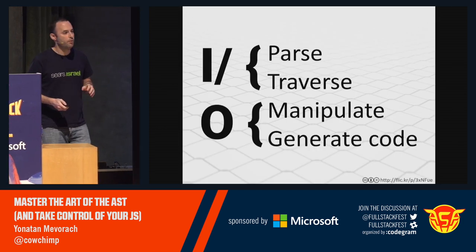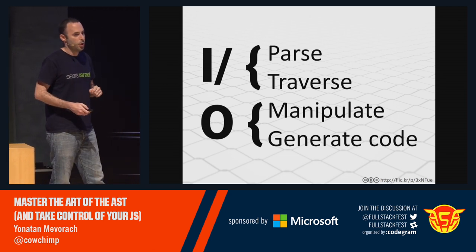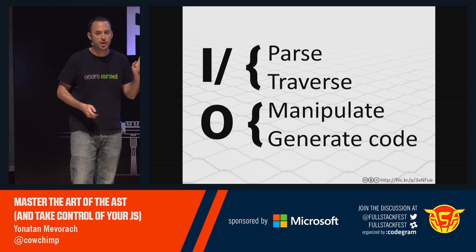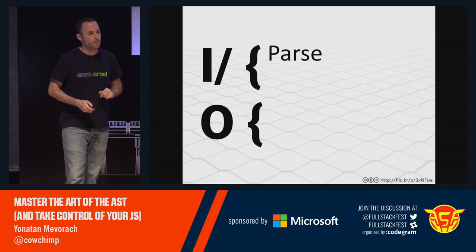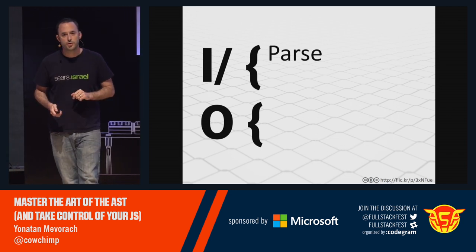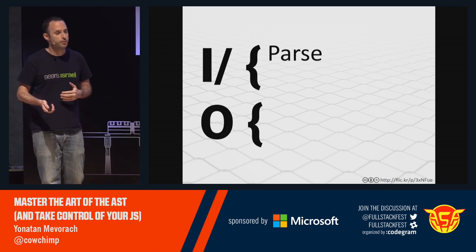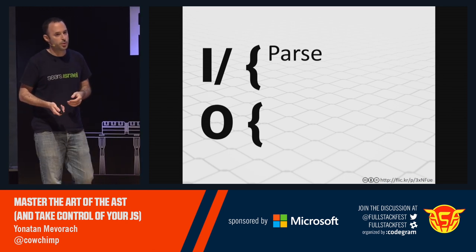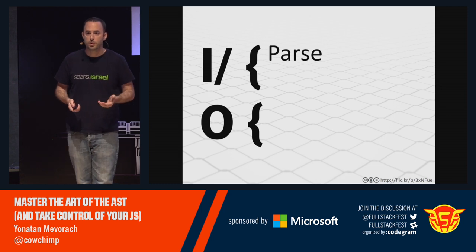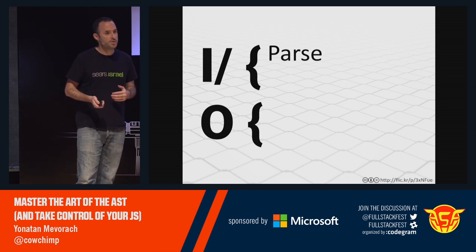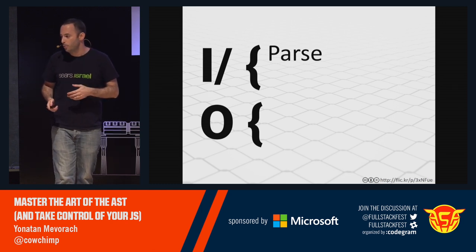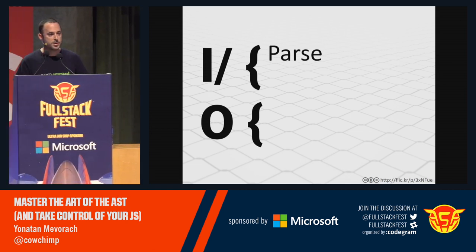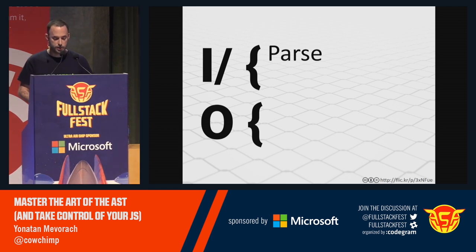There are four steps when we're working with ASTs, and we're going to go over each one. If you're only writing a tool that just needs to read JavaScript and doesn't have to output JavaScript, you can get away with just using the first two. The parse step is all about taking your original source code and converting it into an AST. There are several open source parsers online, and they all expose a parse function that takes a string — your original source code — and returns a JavaScript object, which is the AST. For the examples we're going to look at today, you don't have to choose a parser because all the tools I mentioned already chose one as default.